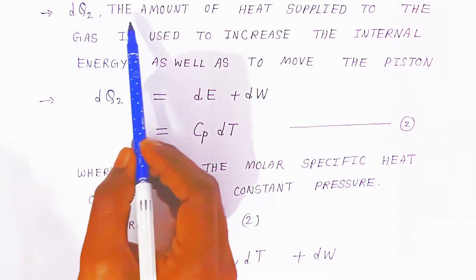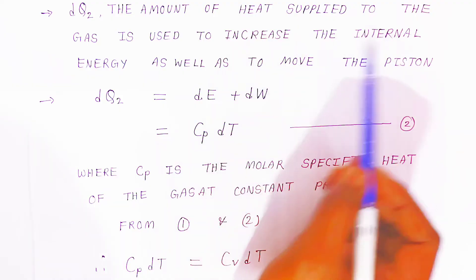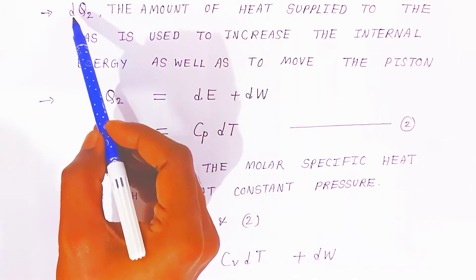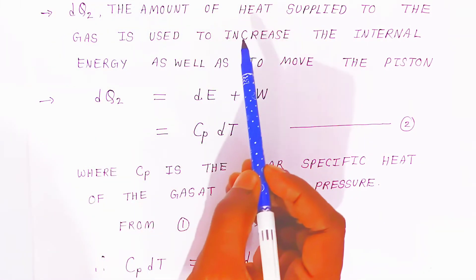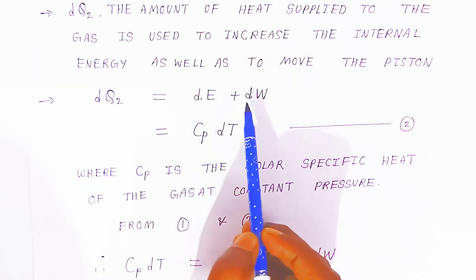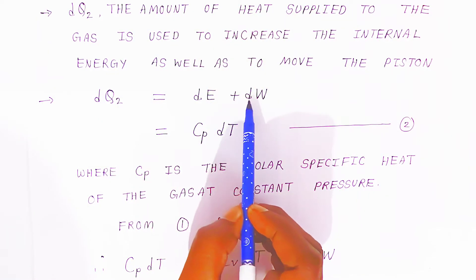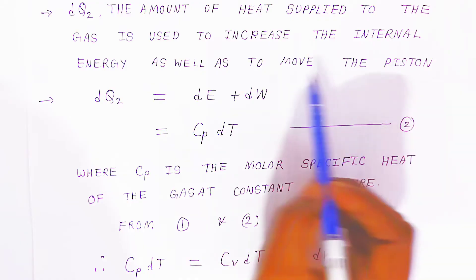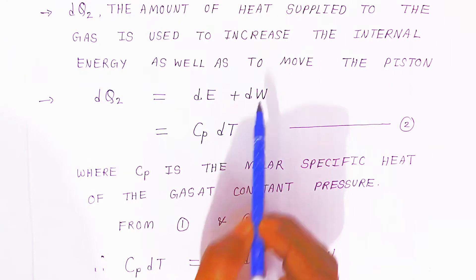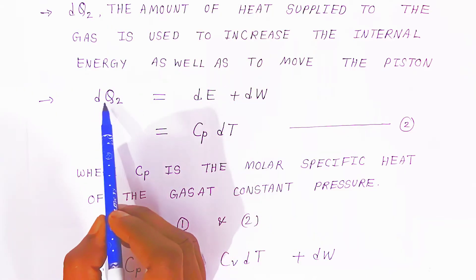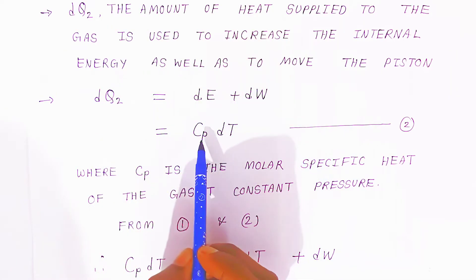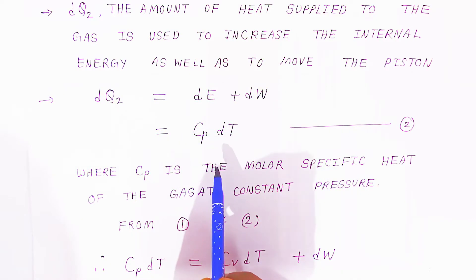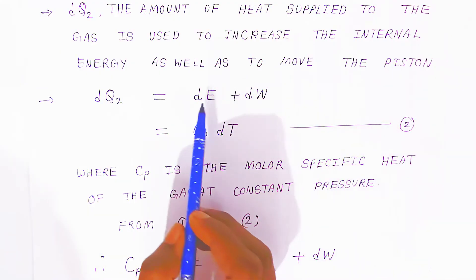Now let dQ2 be the amount of heat supplied to the gas that is used to increase the internal energy as well as to move the piston. In this case the volume is increasing, so there is work done dW. Therefore dQ2 = dE + dW, which can also be written as dQ2 = Cp·dT, where Cp is the molar specific heat at constant pressure. This is equation two.